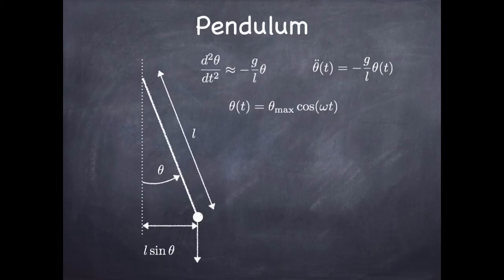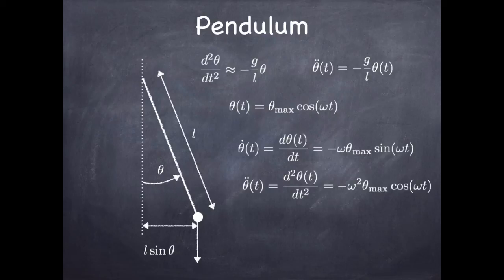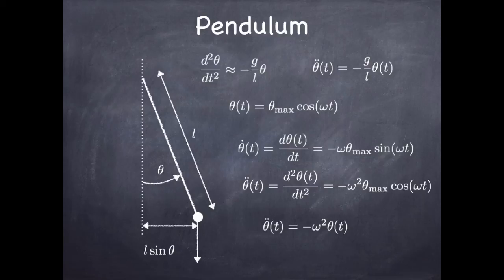If I calculate the first derivative of this proposed solution, I get minus ω times sine(ωt) times the amplitude. The second derivative gives minus ω² times the amplitude times cosine — that was the original solution. So θ̈ = −ω²θ. The momentum principle gave us θ̈ = −(g/L)θ. To make those consistent, ω² must equal g divided by L.